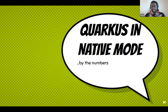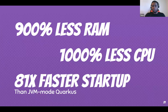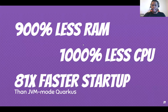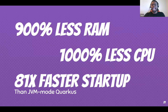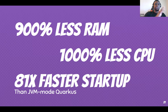Native mode strips away all the fat that traditional Java comes with. By the numbers: up to 900% less RAM, 1000% less CPU utilization, and up to 81 times faster startup than JVM-mode Quarkus. Note that JVM mode is also supported — even a standard Quarkus JAR still performs better than Spring Boot because it's hyper-optimized.